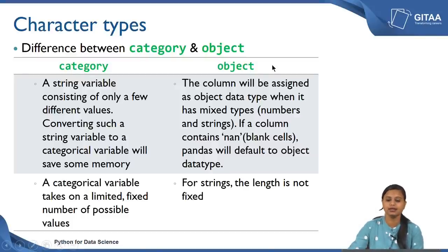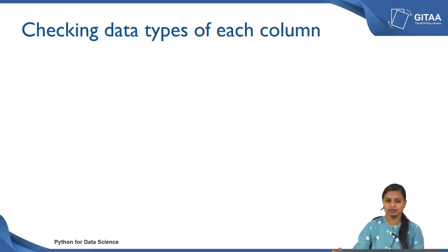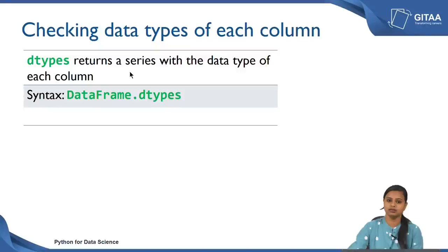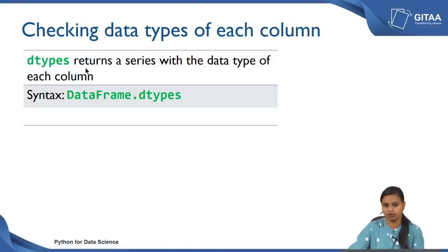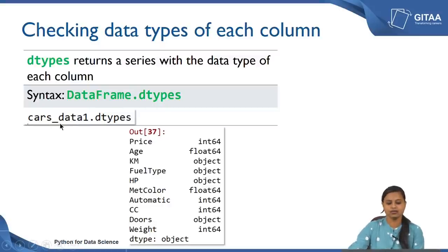Now it is time to check the data types of each column in the data frame. You can use dtypes, which returns a series with the data type of each column. The syntax is dataframe.dtypes. For example, cars_data1.dtypes gives you the data type of each variable. Price is int64, age is float64, and kilometer has been read as object.